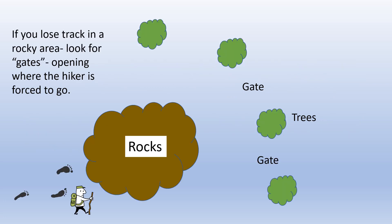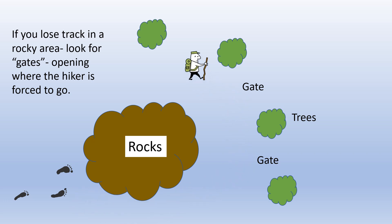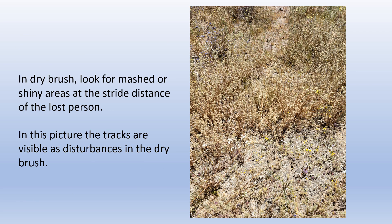If you lose the track in a rocky area, look for gates — openings where the hiker is forced to go. In dry brush, look for mashed or shiny areas at the stride distance of the lost person. In this picture, the tracks are visible as disturbances in the dry brush.